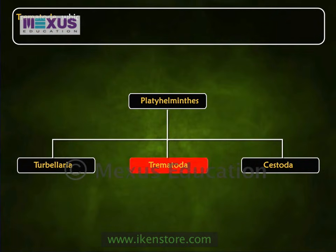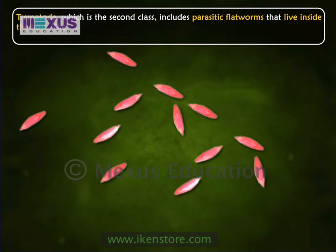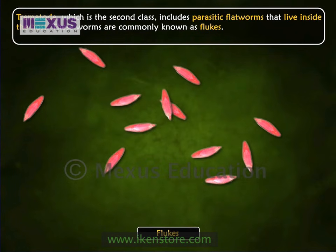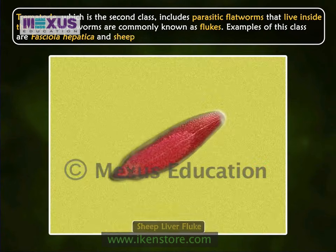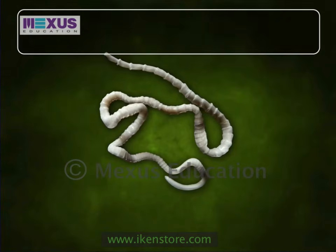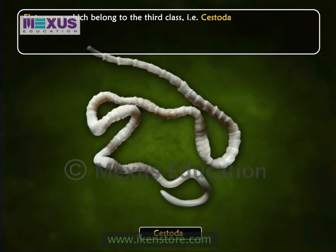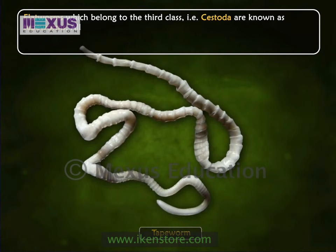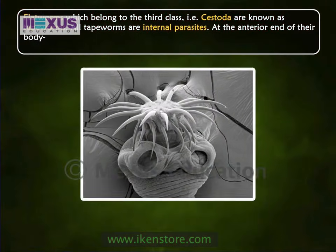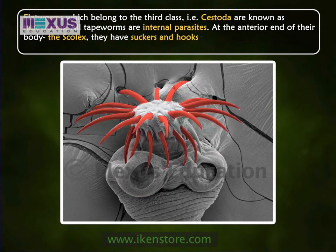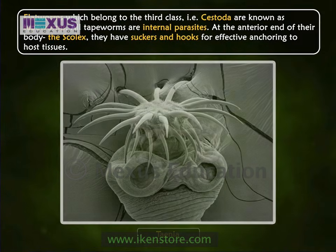Trematoda, the second class, includes parasitic flatworms that live inside a host. These worms are commonly known as flukes. Examples include Fasciola hepatica and the sheep liver fluke. Flatworms belonging to the third class, Cestoda, are known as tapeworms. All tapeworms are internal parasites. At the anterior end, called the scollex, they have suckers and hooks for effective anchoring to host tissues.